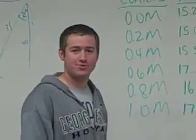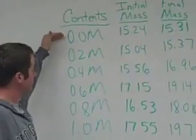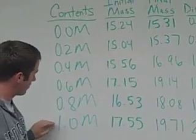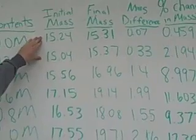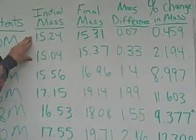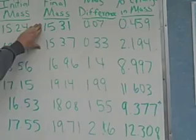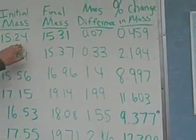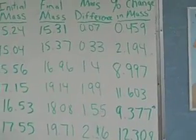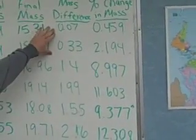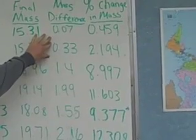Now let's observe the results from our experiment. Here we have the contents in the dialysis tubes, ranging from distilled water to 1 molar sucrose. Next is the initial mass — the mass recorded before the dialysis tubings were submerged in the water. In the next column we have the final mass, which is the mass measured after the dialysis tubes were submerged. As you can see, there is a good increase from initial to final mass for each molar sucrose dialysis tube. The next column shows the difference, which is the final mass minus the initial mass, and for each molar sucrose there is a change in mass from final to initial.